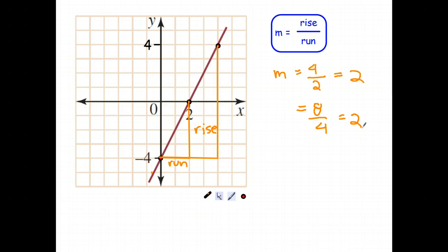In fact, you could have just chosen that point and that point. And the rise is going to be 2 units. The run is 1 unit. So we're talking about this little triangle in there. Rise is 2, run is 1, and that's also 2.